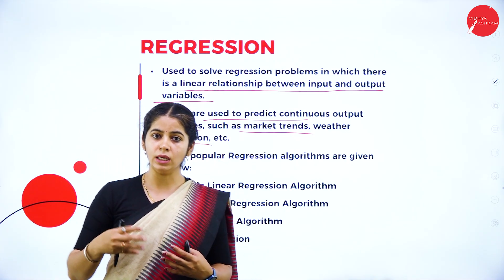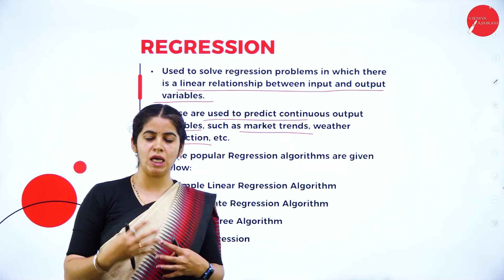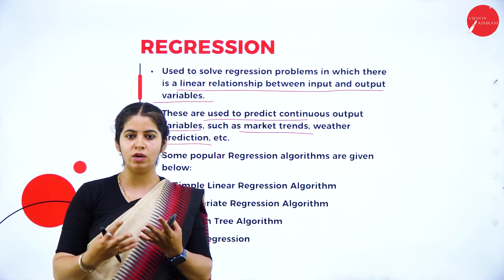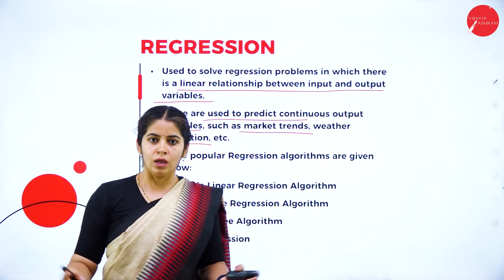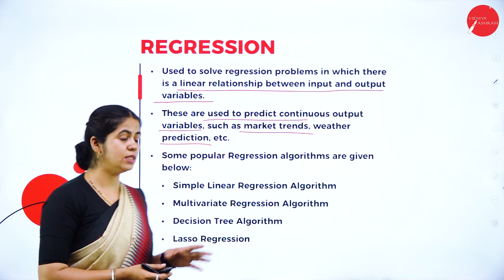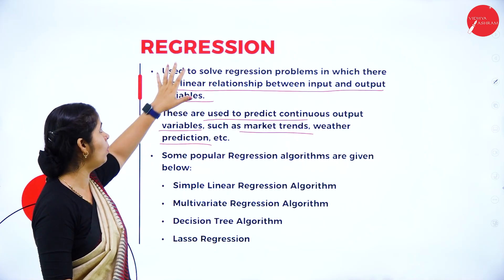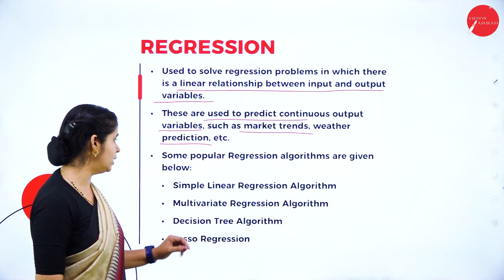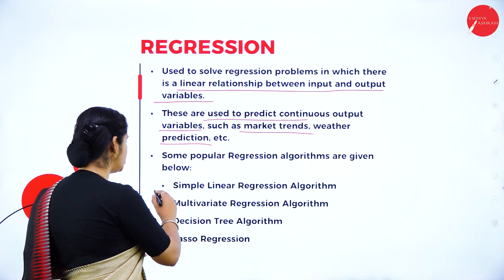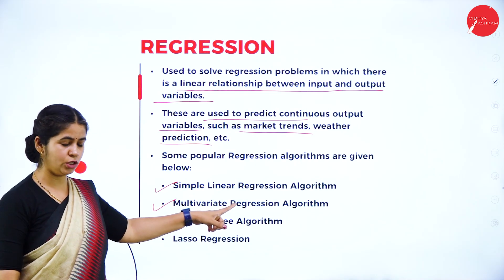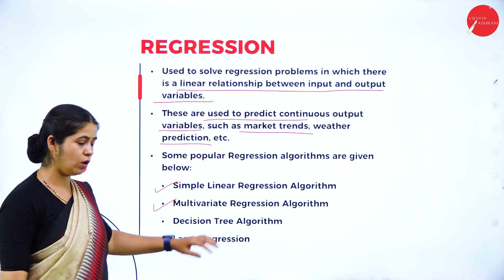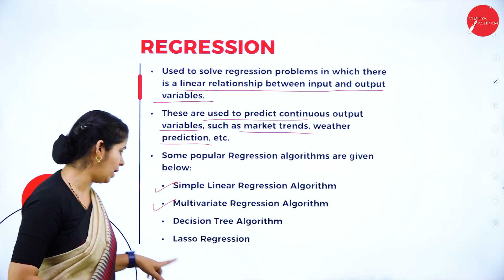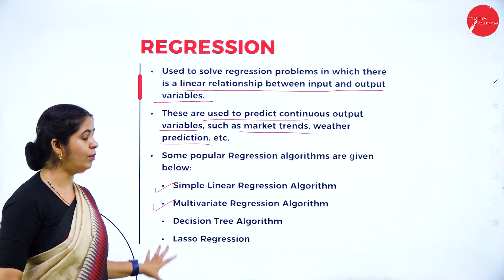Examples of regression include market trends and weather prediction. As you are working with the stock market, the market values will keep changing. For weather reports, it may be hot in the morning, raining in the afternoon, and cloudy in the evening — it keeps changing. That type of supervised learning is provided using the regression method. Popular regression algorithms include Simple Linear Regression, Multi-variate Regression, and Decision Tree Algorithm, which can be used for both classification and regression.